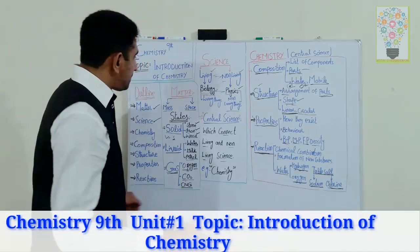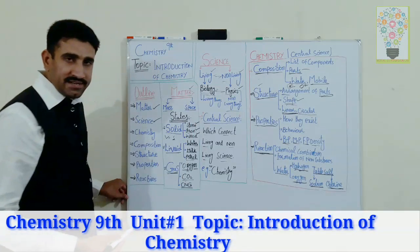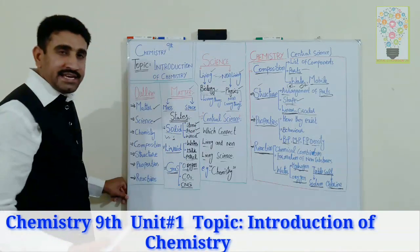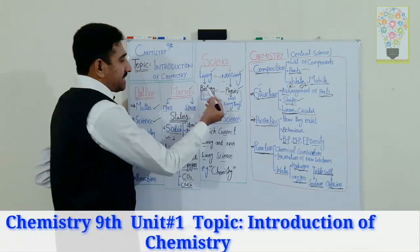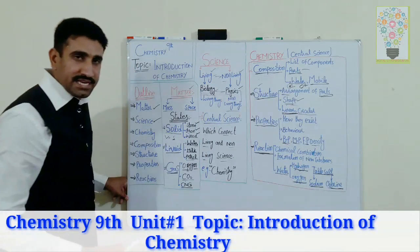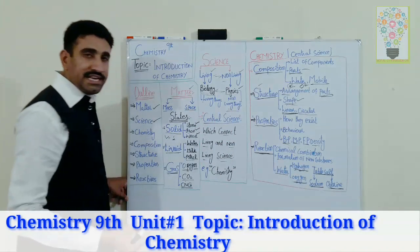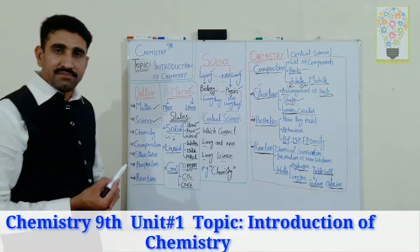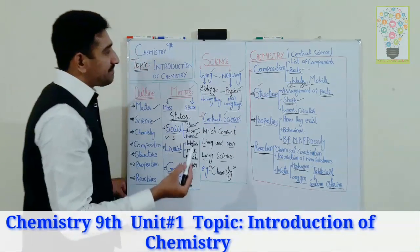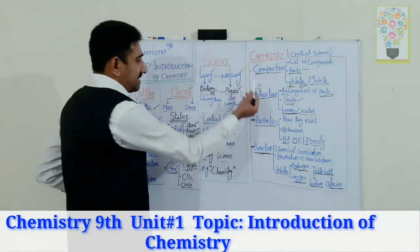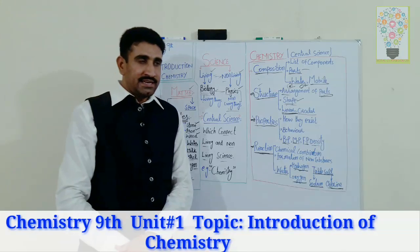Let us review: first, matter; then science with two major branches — living science (biology) dealing with living things, and non-living science (physics) dealing with non-living things. Chemistry is the central science dealing with both, and it covers four aspects of matter: composition, structure, properties and reactions.